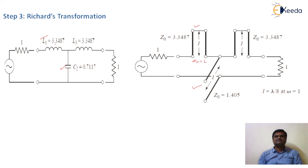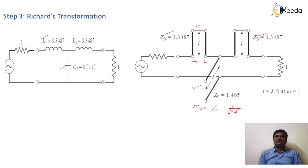The inductor is represented by a short circuit stub and the capacitor by an open circuit stub. The impedance of the short circuit stub equals the L value, which is 3.3487. For the open circuit stub, the impedance J0 equals 1/C, which is 1/0.7117, giving 1.401. The length of each stub is lambda/8, designed at omega equal to 1. This is the Richards transformation.